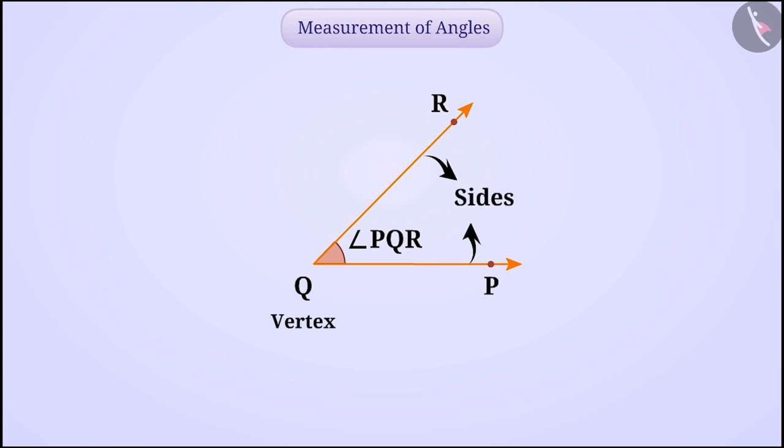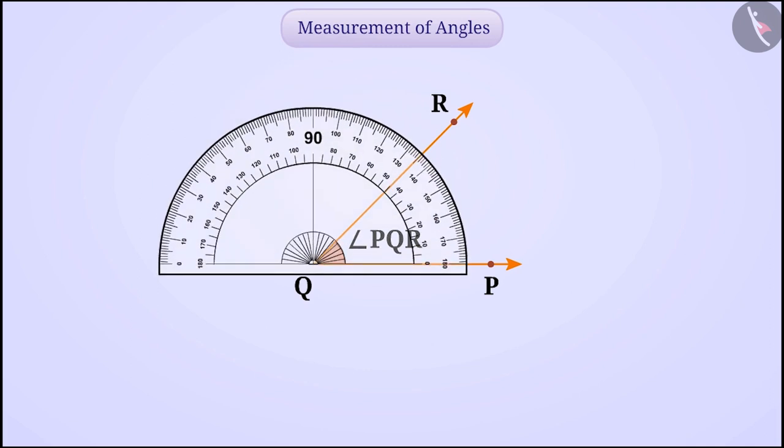Let us find the measurement of this angle. To start with, we place the protractor in such a way that the midpoint of its straight side comes on top of vertex Q. We will adjust the protractor in such a way that the line shown on the straight line completely covers any one side of the angle.